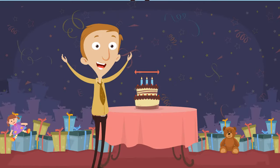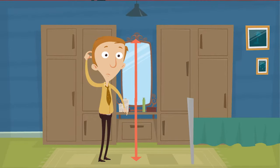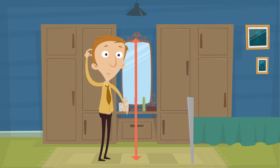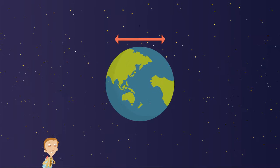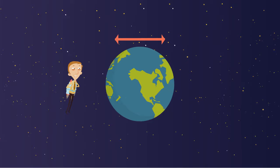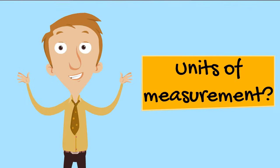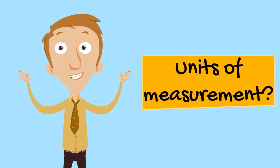That could mean the distance from one side of a cake to the other side of the cake. It could mean the distance from my toes up to my head. We could be talking about how far I can run — that could be a length. Or we could be talking about something huge like the distance from one side of the earth to the other. Depending on what we're measuring, we'll need to use a different unit of measurement for length.